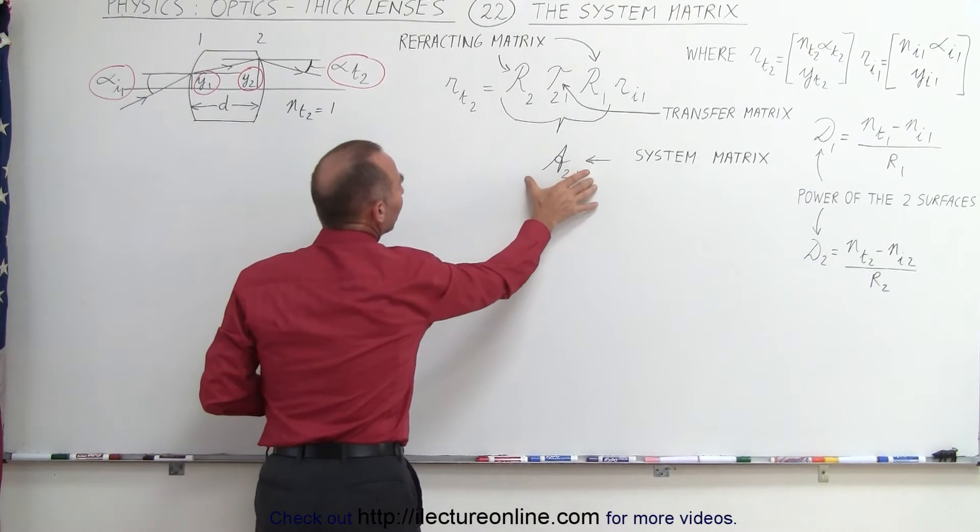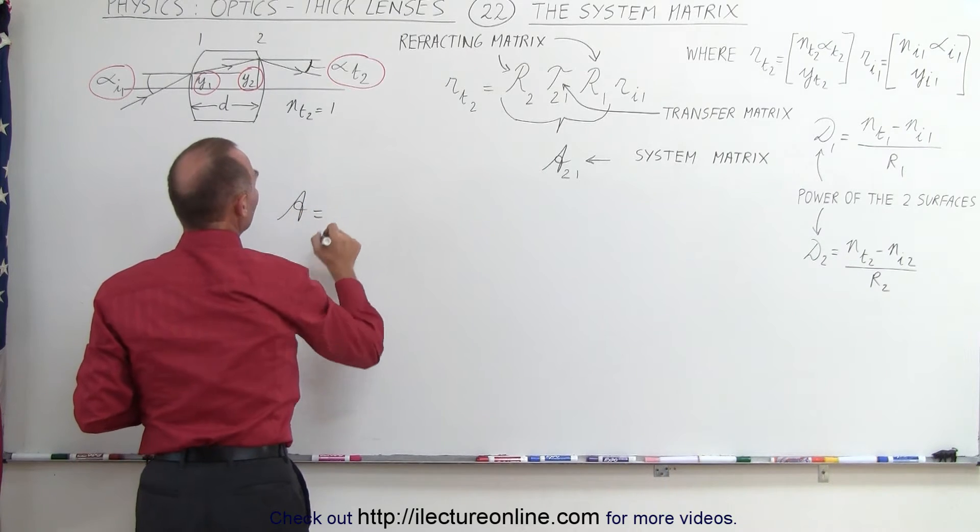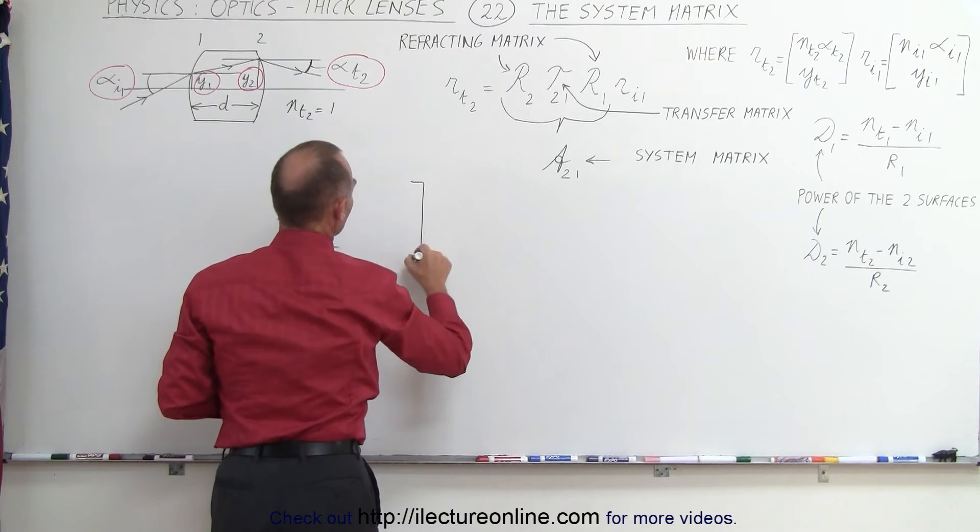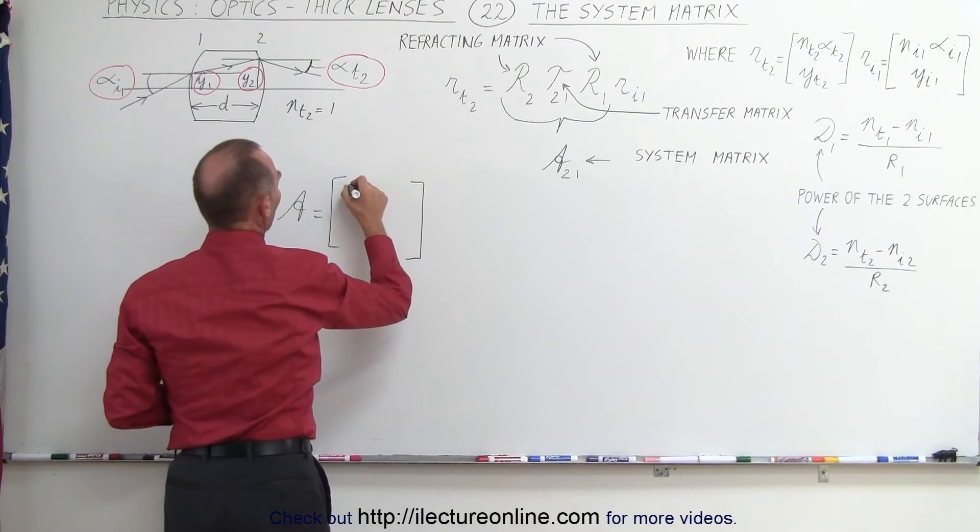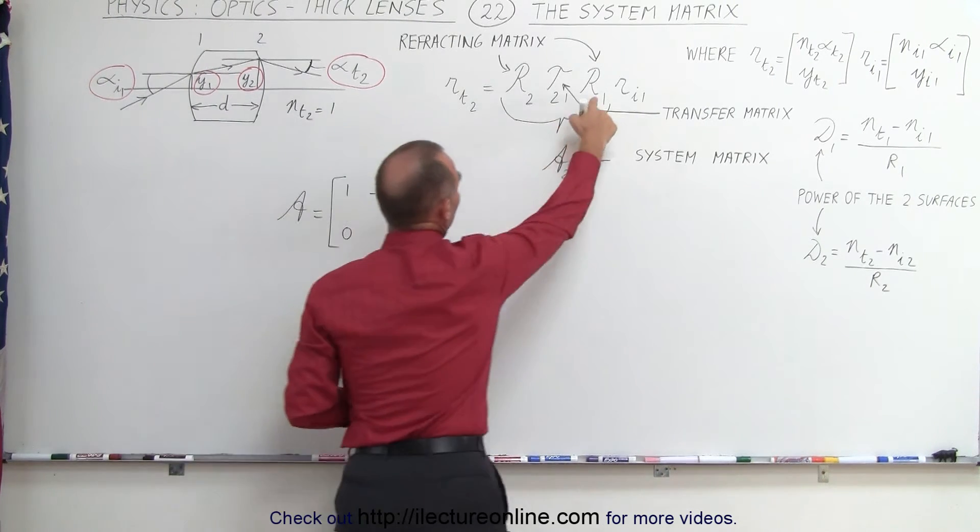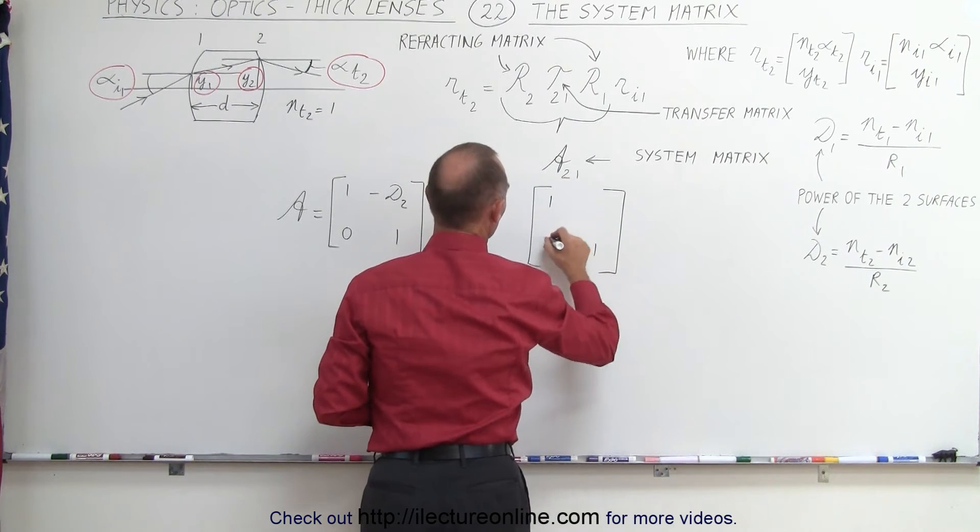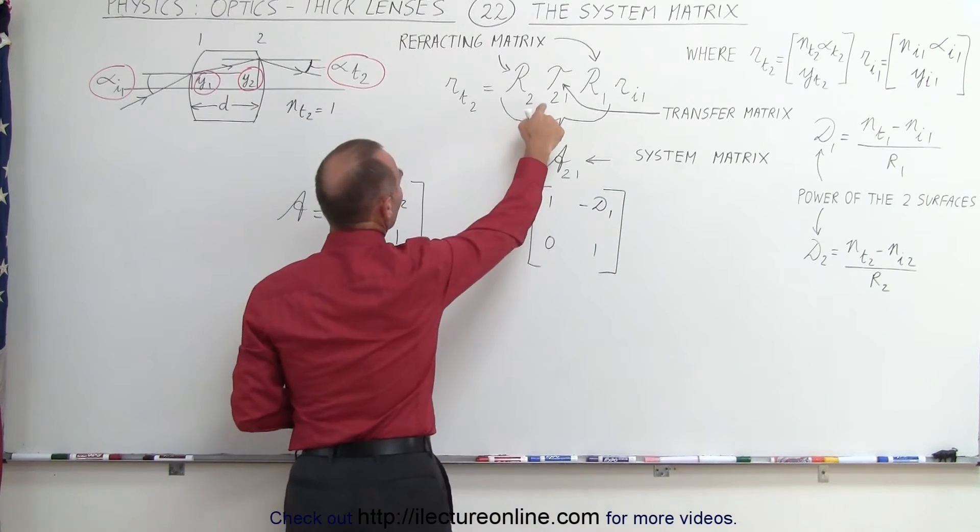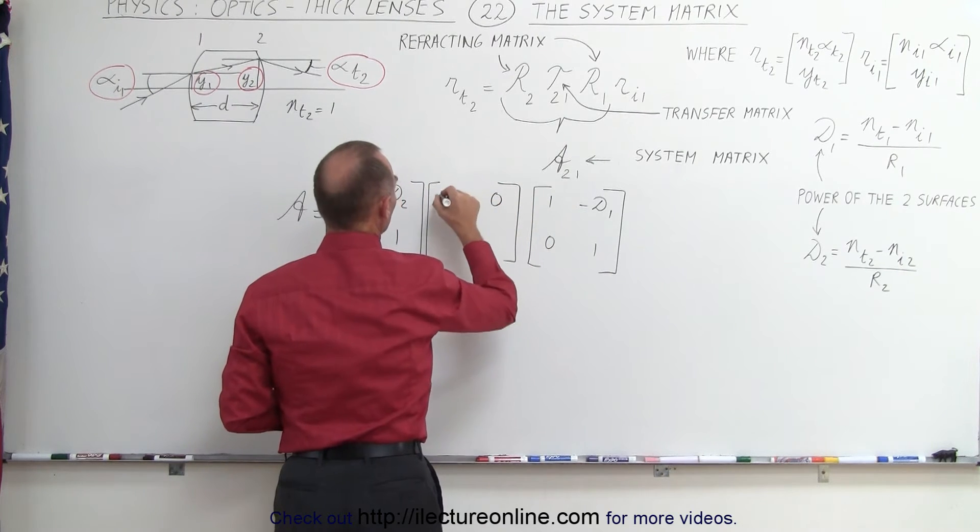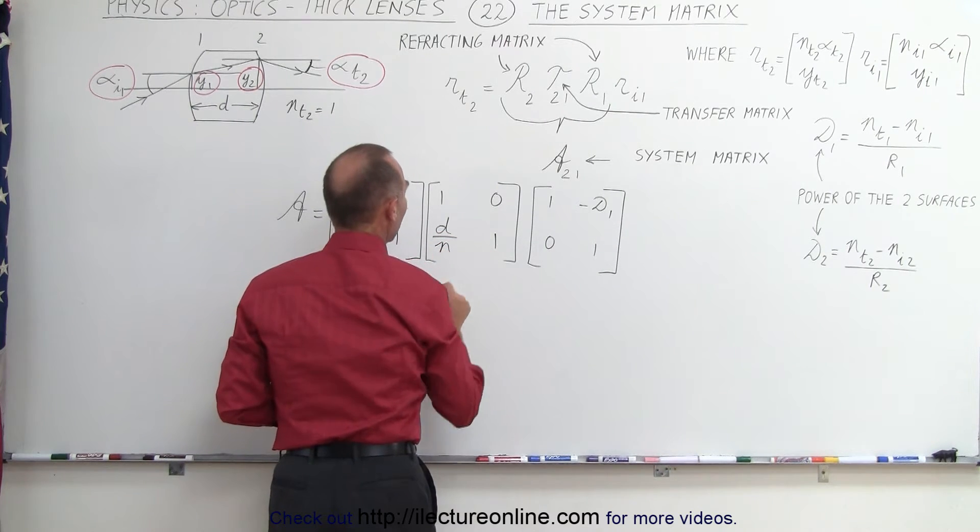All right, now let's go ahead and represent this in a matrix format. So, we can write that A is equal to, this is the system matrix, the product of these three matrices. So, this is the second boundary. So, we end up with 1, 0, and minus D2. We have the first boundary. We can put that over here. Notice that will be the matrix 1, 0, and minus D1. And then the transfer matrix looks like this. It has a 0 up here, 1, 1, and here it has the distance it travels through the lens divided by the index of refraction of the lens.